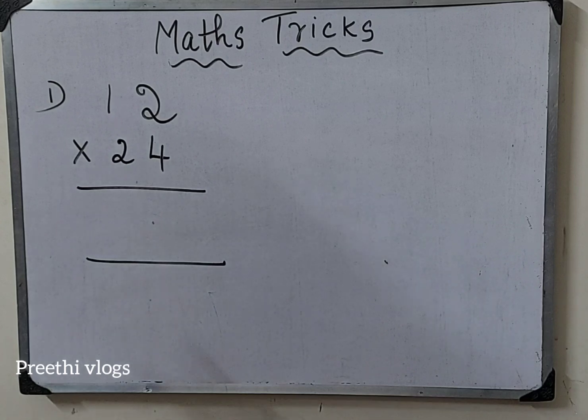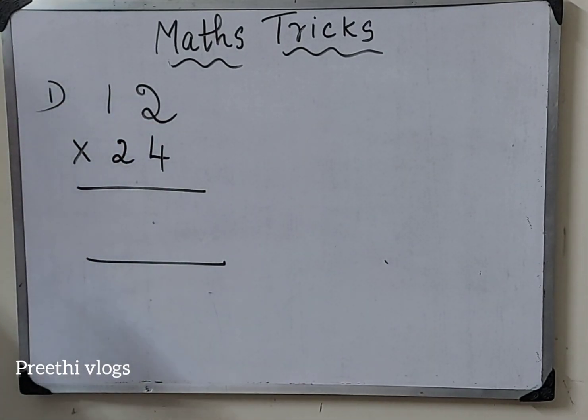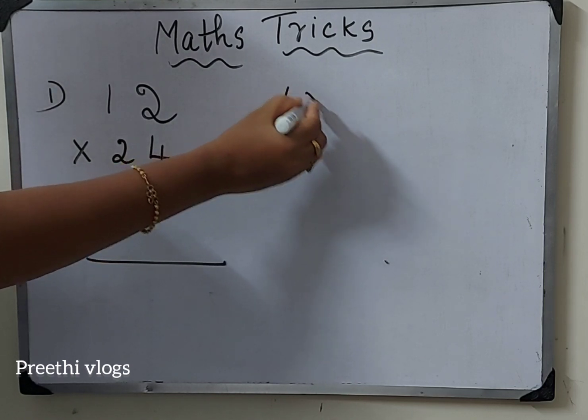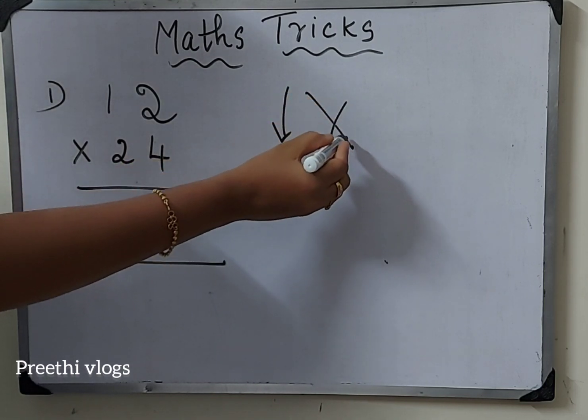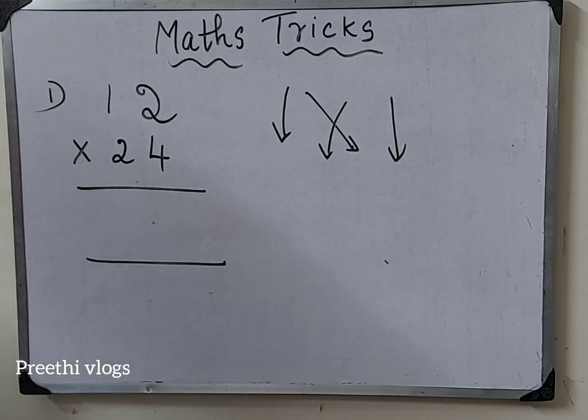Now, the first example: 12 multiply by 24. What I have told is arrow mark representation - down arrow mark, cross arrow mark, and another down arrow mark. We will see how we do it.